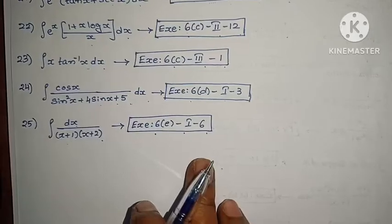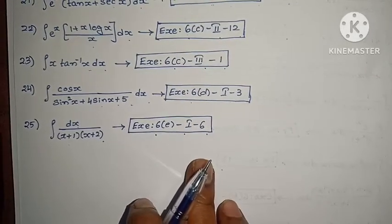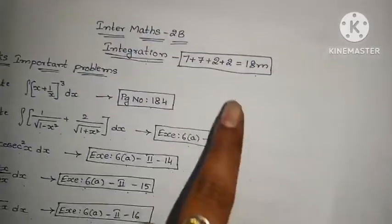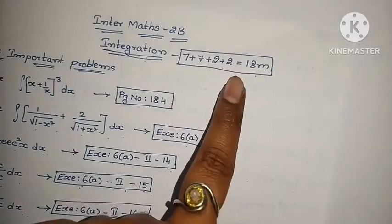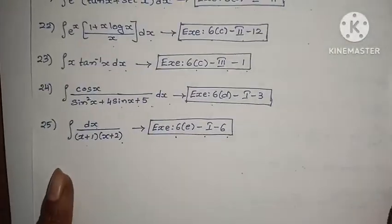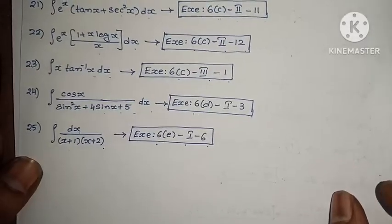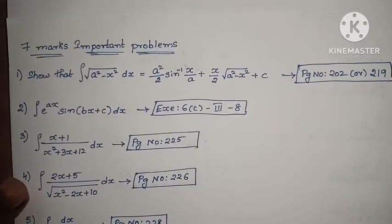2-mark problems are now complete — we have covered 25 two-mark problems. Now moving on to the important 7-mark (san marks) problems.